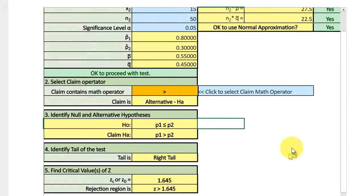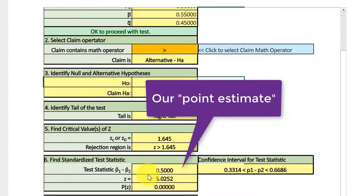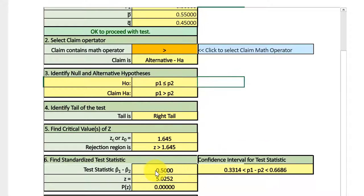So if we scroll down a bit, we find here the confidence interval for the test statistic is 0.331 and the upper limit is 0.669. Those are the correct answers there. If we're given our test statistic, that's our point estimate of 0.5, which is positive, which tells you that P1 is greater than P2.